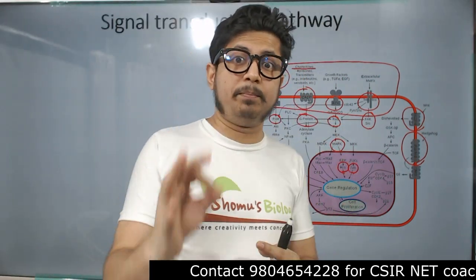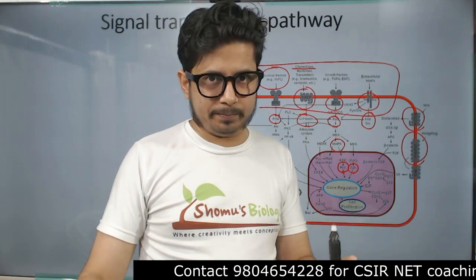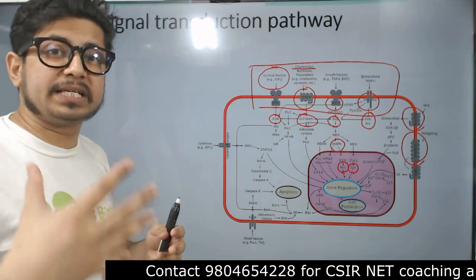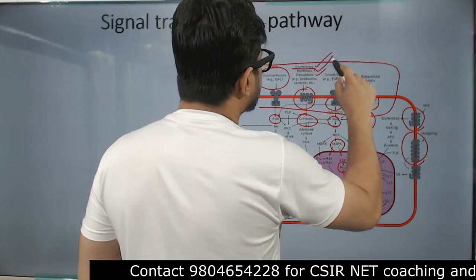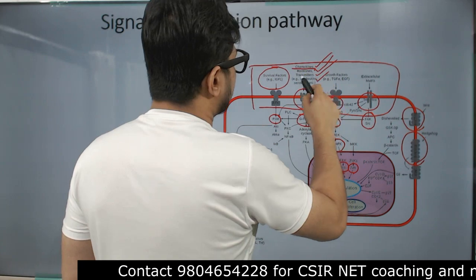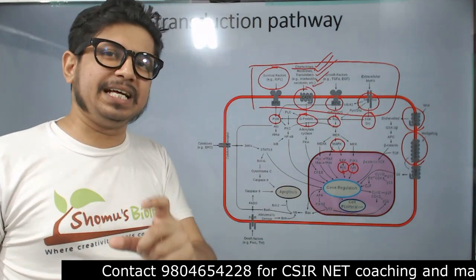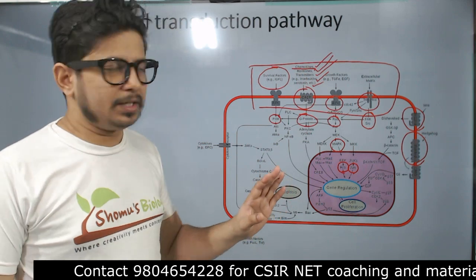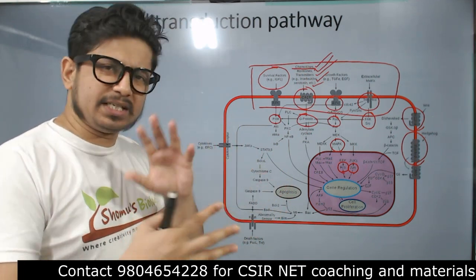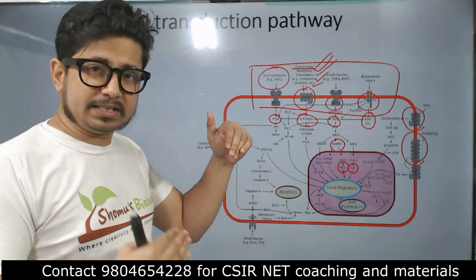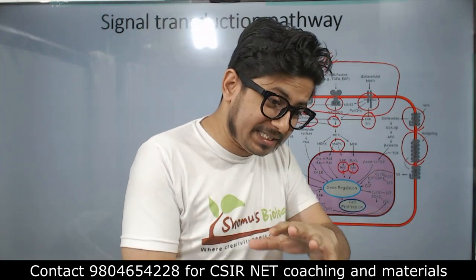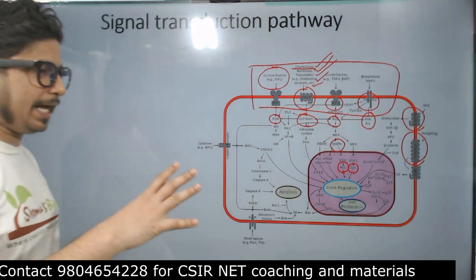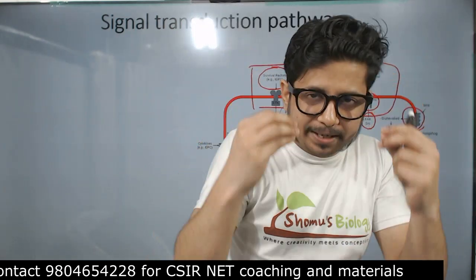Signal transduction pathway occurs in every single cell signaling pathway, each with its own relay and amplification process. For individual signaling, multiple factors can follow the same signal transduction pathway. For example, chemokines, hormones, neurotransmitters, interleukins, and serotonin can all follow one single signal transduction pathway via GPCR → G protein → adenylyl cyclase → protein kinase → CREB → gene regulation. Multiple signaling molecules may share a single signal transduction pathway.